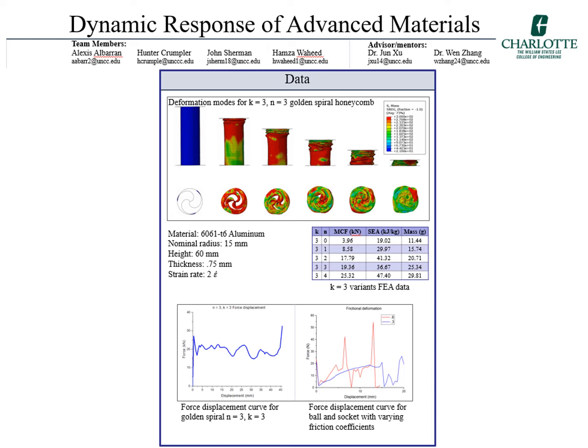Looking at the table which contains the data for varying number of arms for a K value, the effects of the spiral can be shown by inspecting the increasing trend of the SEA with respect to the number of arms.